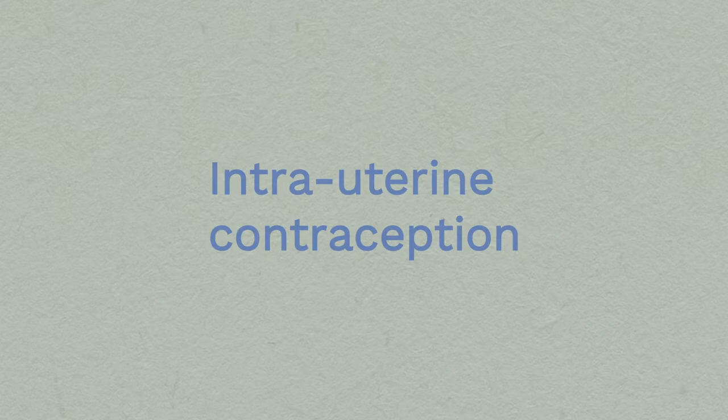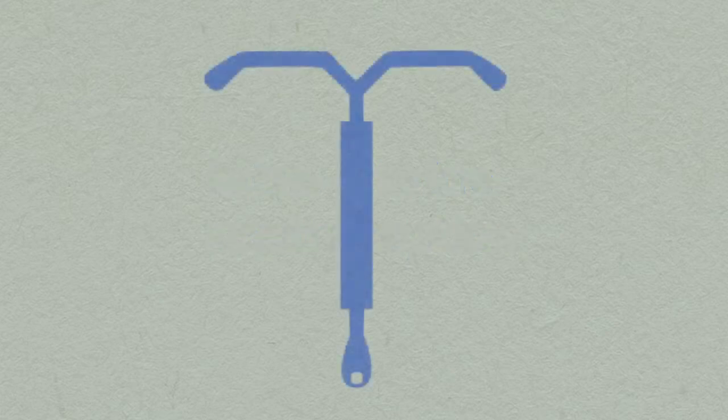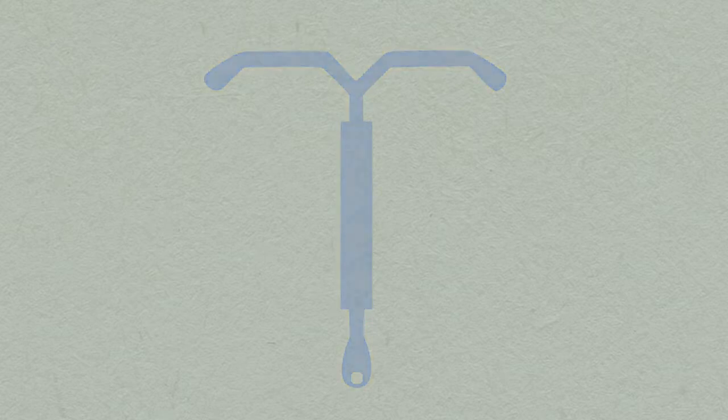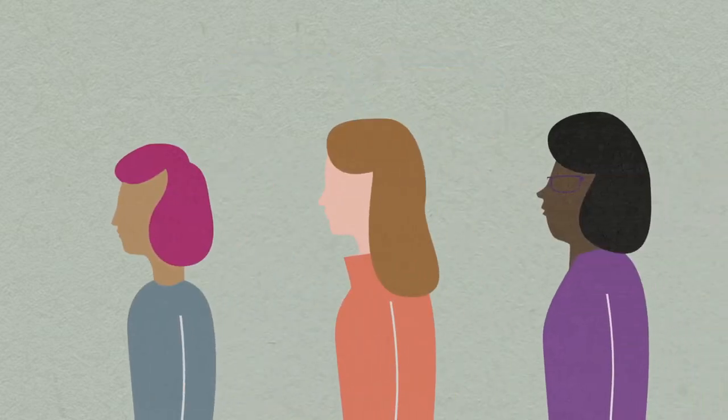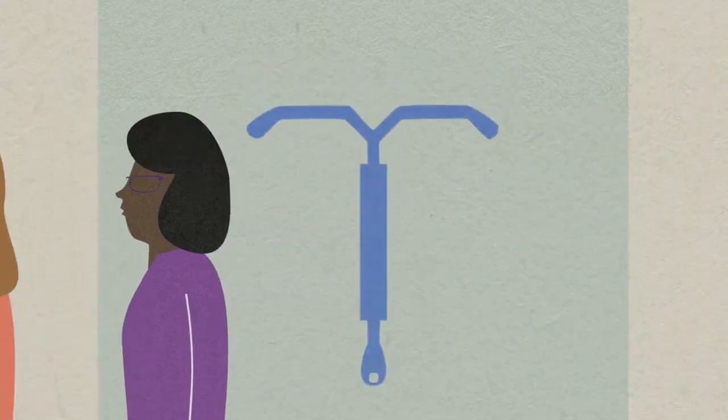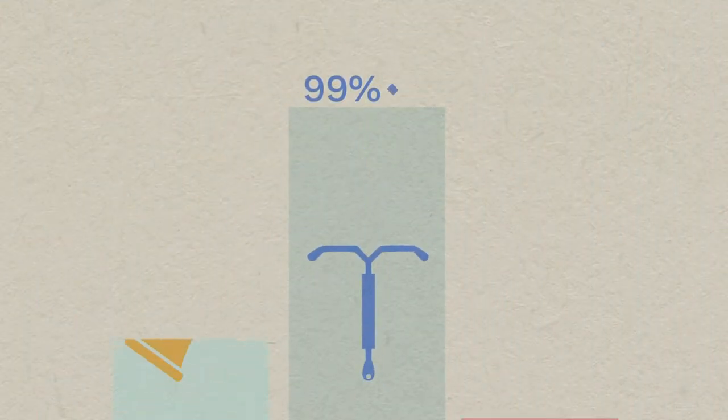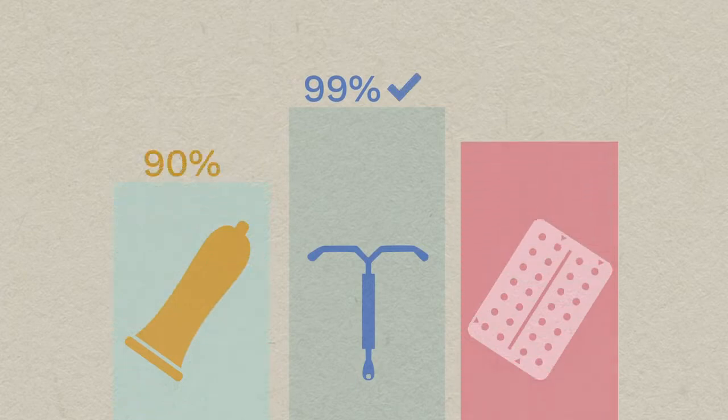Intrauterine contraception, known as the coil, is a popular form of long-acting, reversible contraception. It's chosen more and more by women of any age, whether or not they've been pregnant before. It's over 99% effective, more effective than condoms or even the pill.